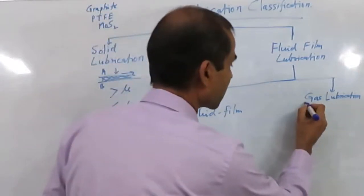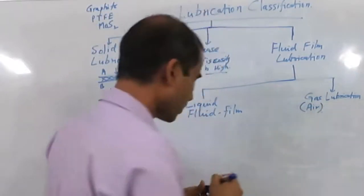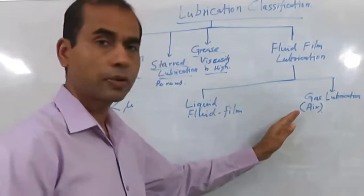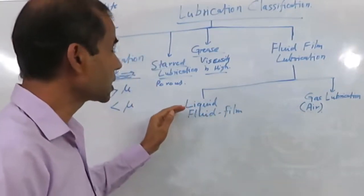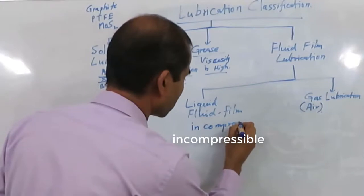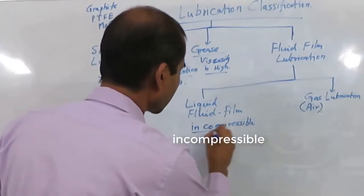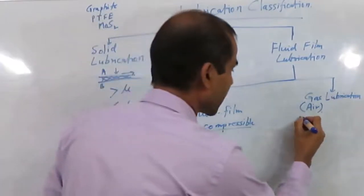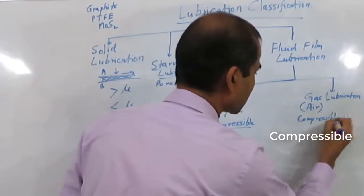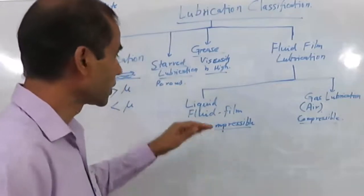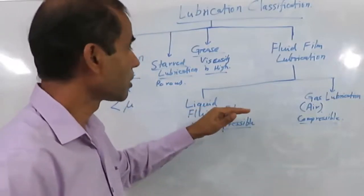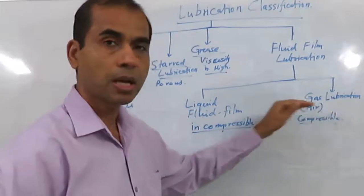There are some advantages and disadvantages of these two types of lubrication. One very important difference is that liquid is considered incompressible, whereas gas is compressible. This property of the fluid itself gives some differences between the two. Otherwise, the principle of liquid lubrication and gas lubrication are exactly the same.